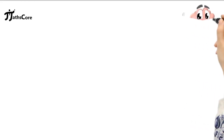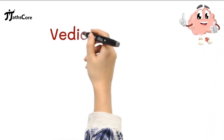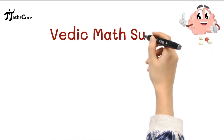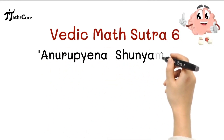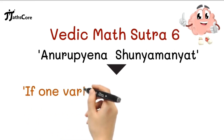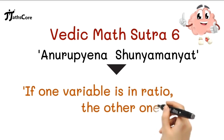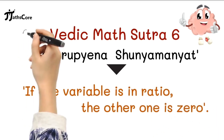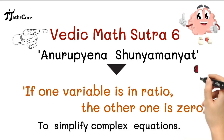Hello everyone, welcome back to our channel. Today we are diving into the fascinating world of Vedic mathematics. In this video we will explore Vedic math sutra 6, which is Anurupena Shunyamanyat, which translates to: if one variable is in ratio, the other one is zero. This sutra is a powerful tool for simplifying complex equations.